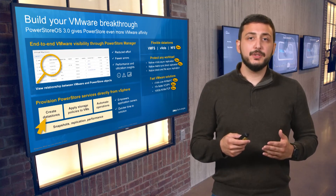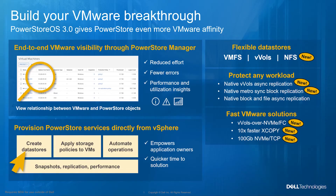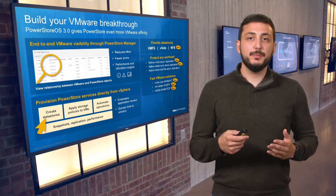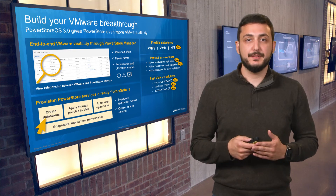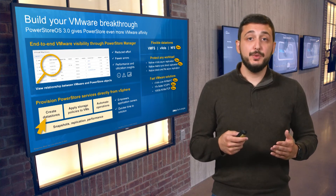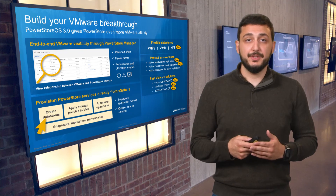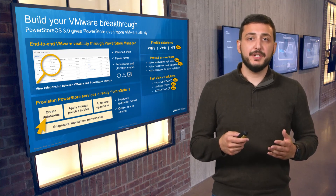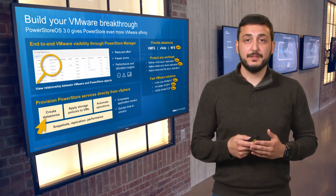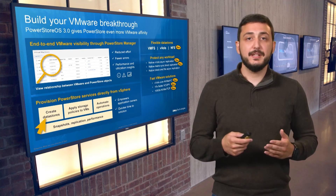With this release, you can also expect up to 10 times faster X-copy operations. This is based on more efficient utilization of the VAAI X-copy command. It applies to any copy operation in a VMware environment, for example when copies of virtual machines are deployed from templates. Real-world use cases include desktop pool creation, or the log-off and refresh phase within VDI deployments, as well as any write-intensive operation.